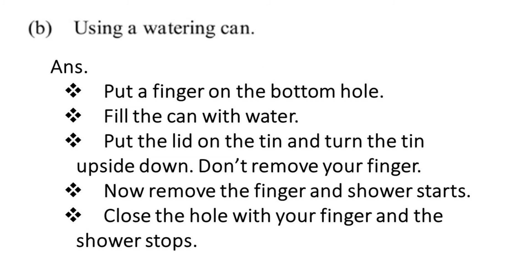Part B — using the magic watering can. Step one: put a finger on the bottom hole. Step two: fill the can with water. Step three: put the lid on the tin and turn the tin upside down — do not remove your finger. Step four: remove your finger and the shower starts. Step five: close the hole with your finger and the shower stops.